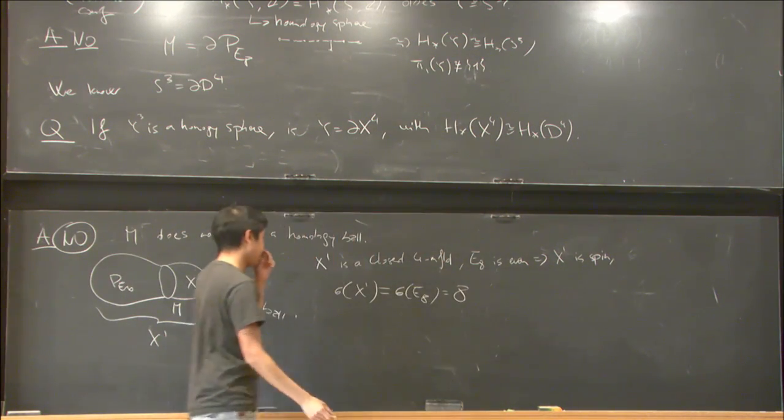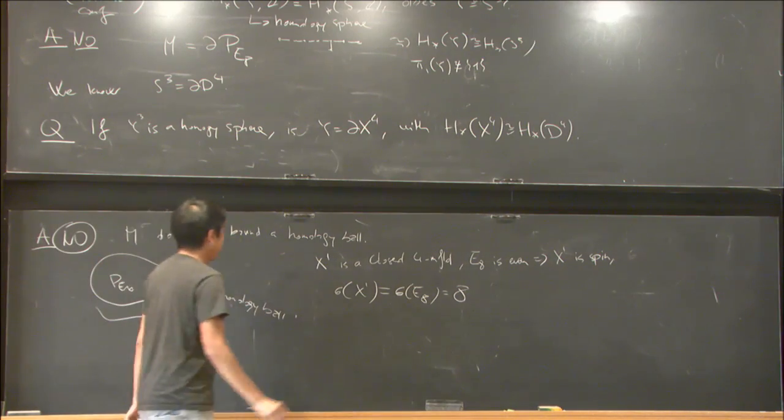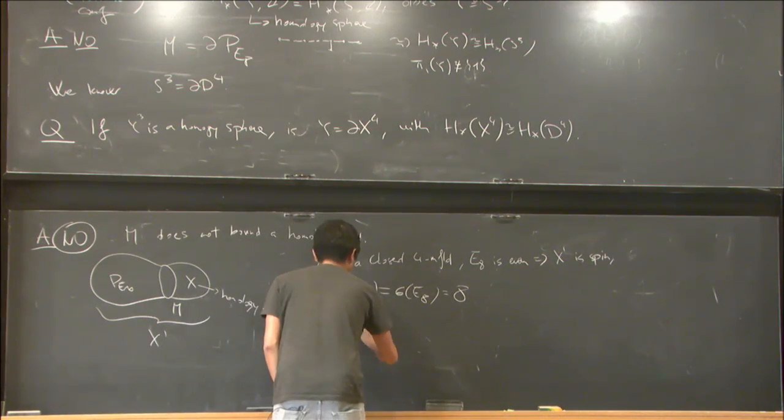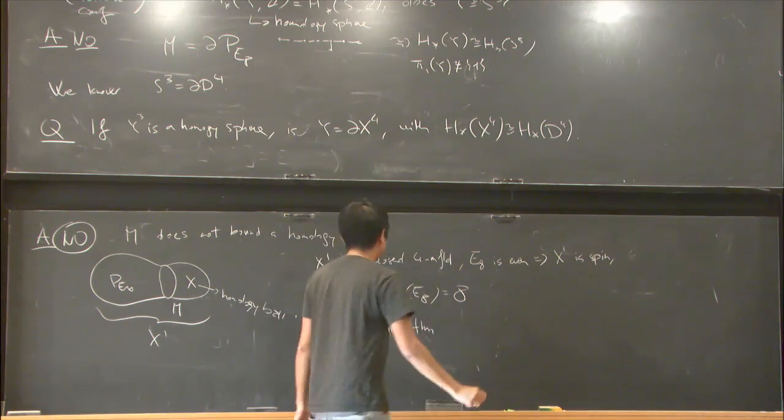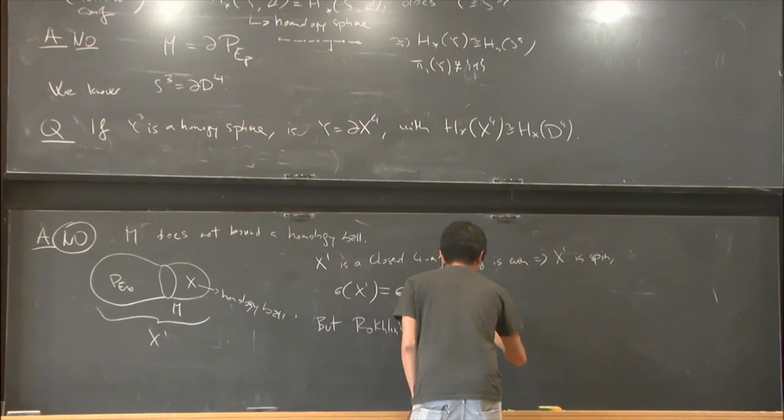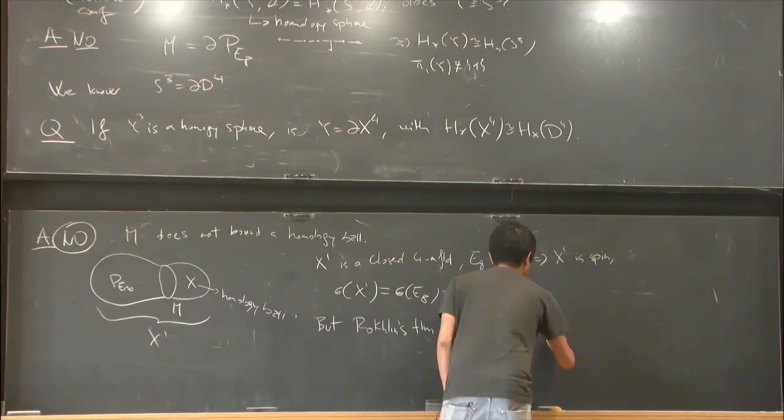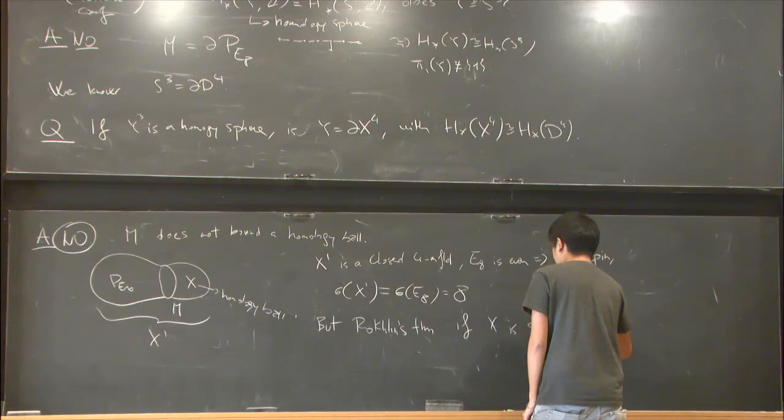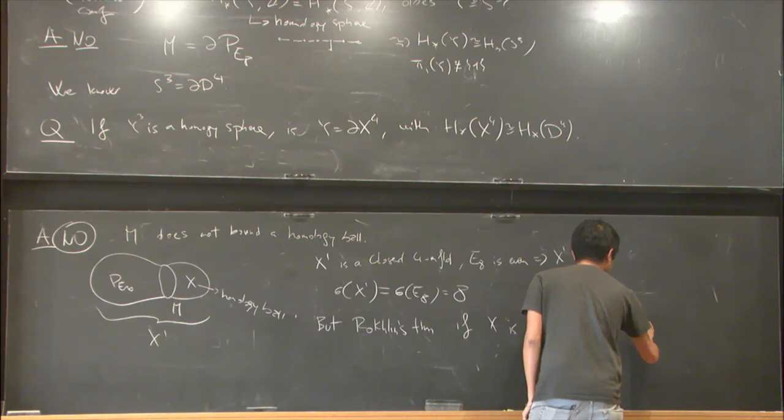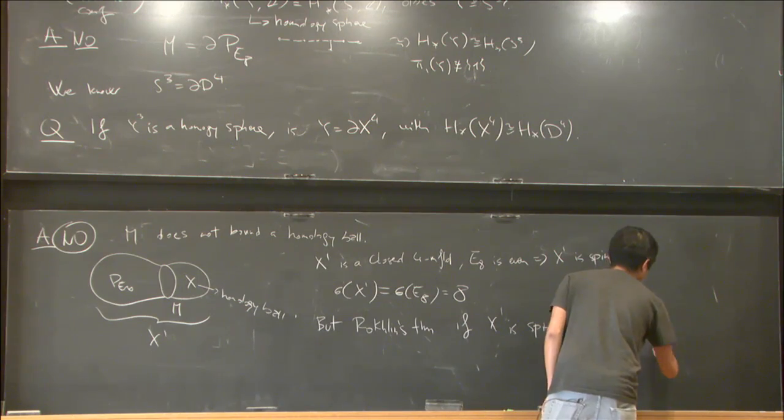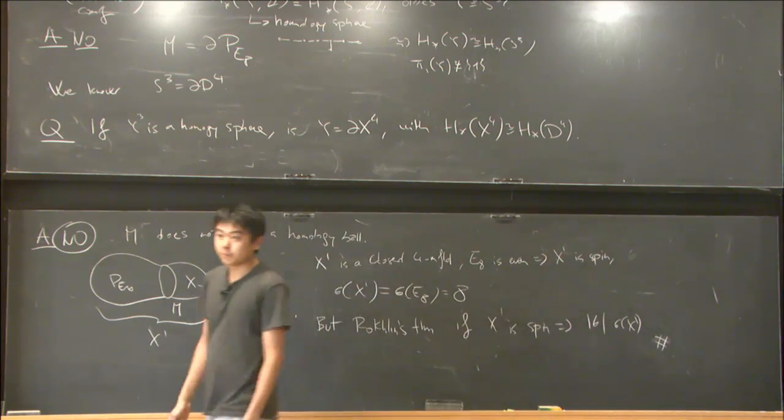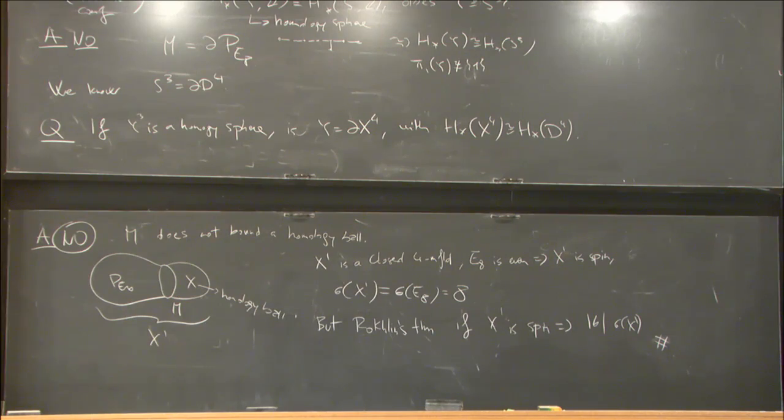But there's this classic Rokhlin theorem that tells me that if X is spin, then 16 divides the signature. This is a contradiction. So this shows that the Poincaré homology sphere doesn't bound any homology ball.